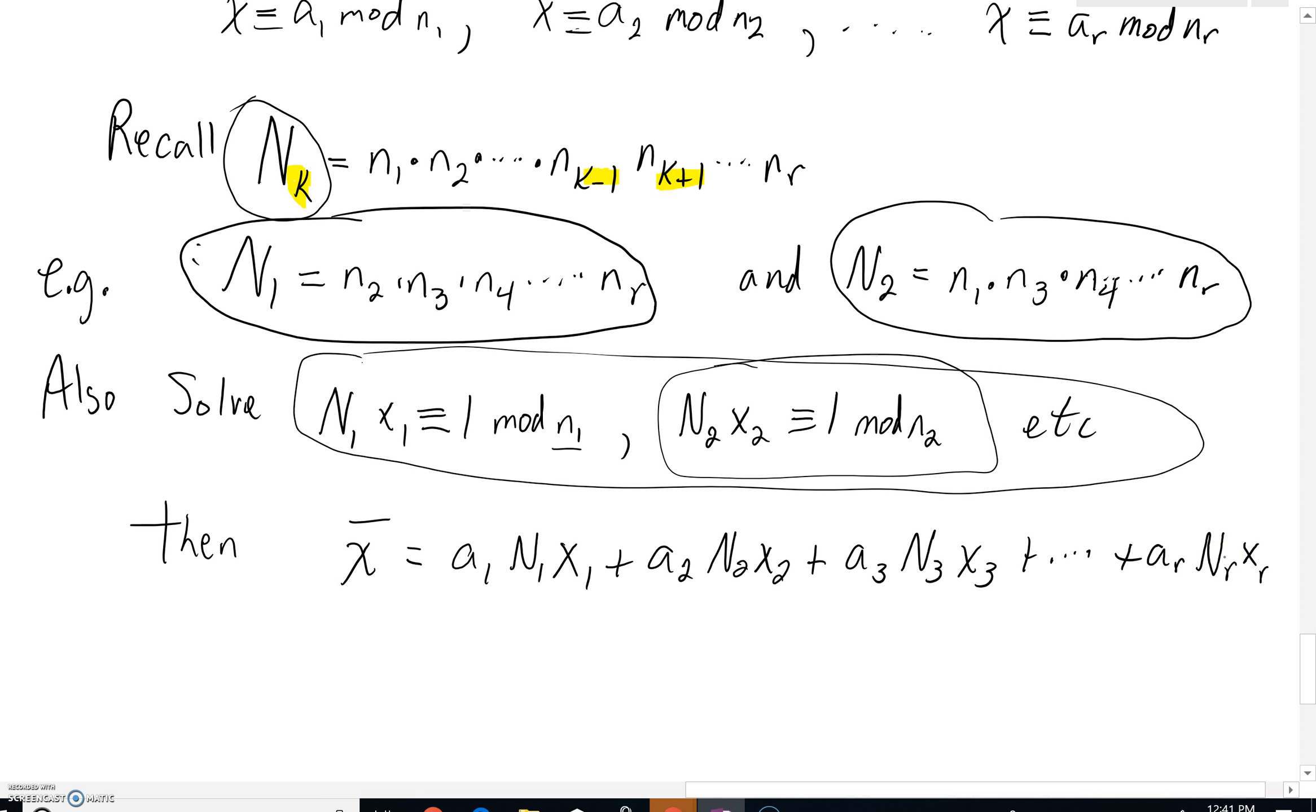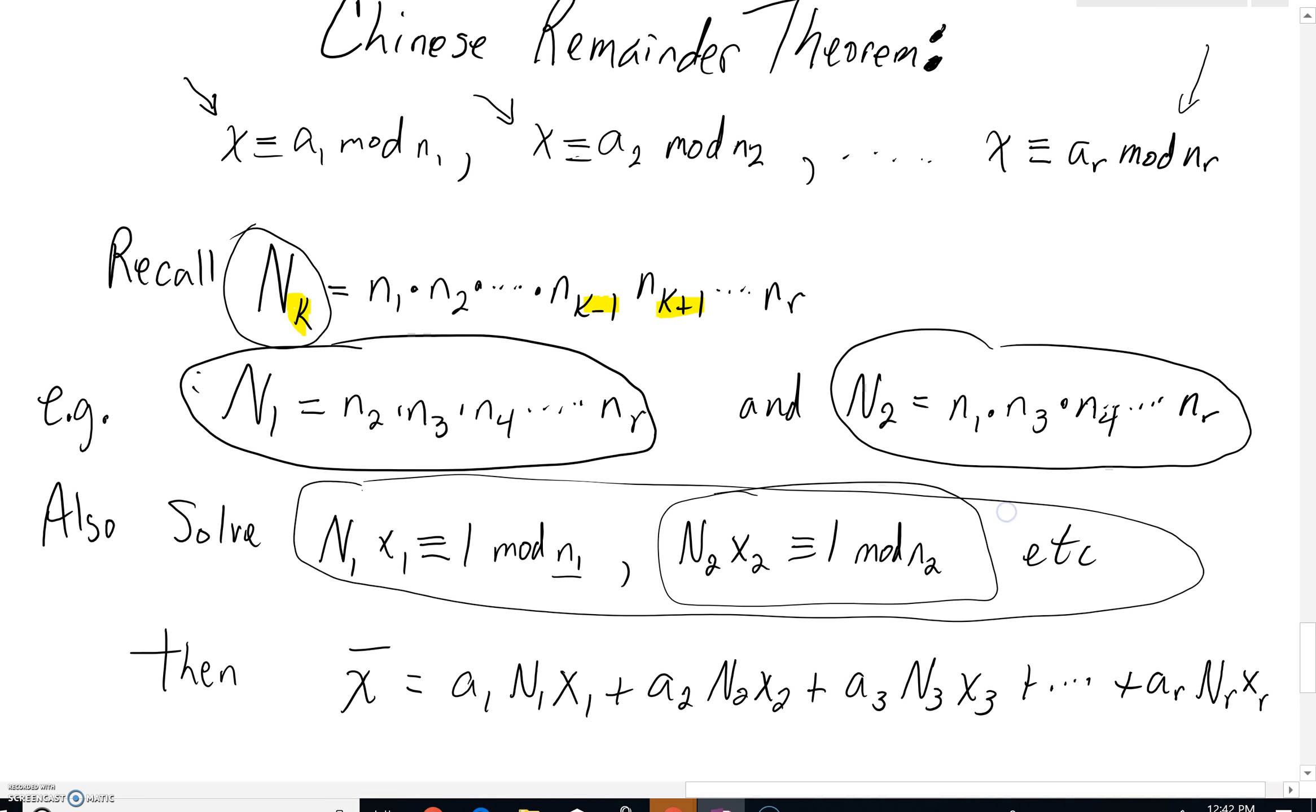When you multiply that all together, that's going to be your solution in the mod that you'd have multiplied with n sub 1 times n sub 2, all the way up to n sub r.